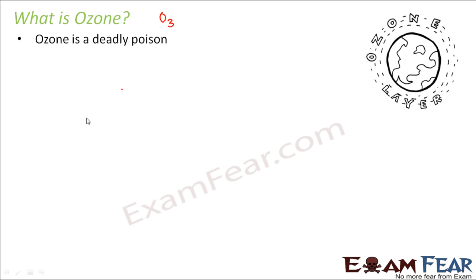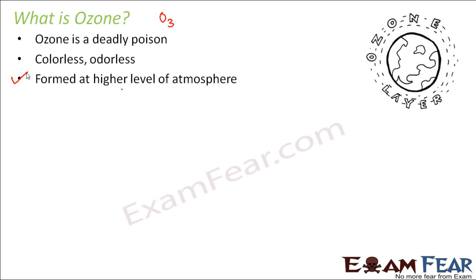So now the question is, where is ozone present and how is this ozone formed? Ozone is a colorless, odorless gas — that means it has no color and no smell, so it is actually very difficult to detect the presence of ozone. It is formed at higher levels of the atmosphere. Towards the upper layer of the atmosphere, ozone is formed and that is why it forms a protective layer outside the atmosphere. So when the ultraviolet radiation tends to enter the atmosphere, before that itself it gets absorbed by the ozone layer.